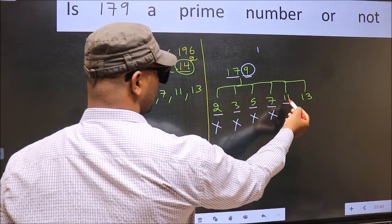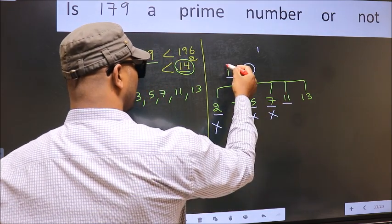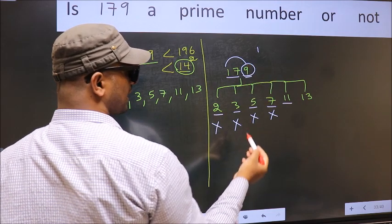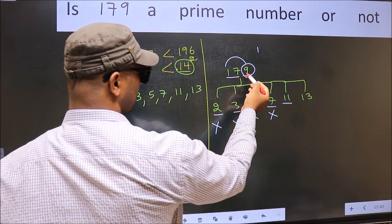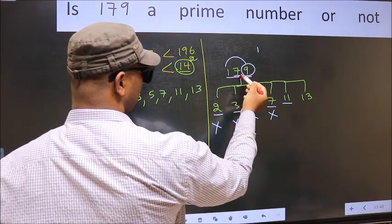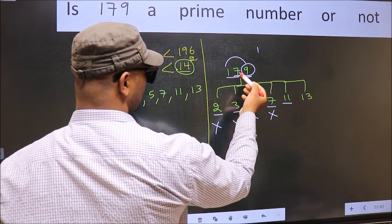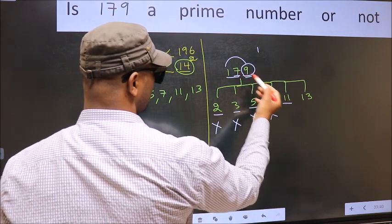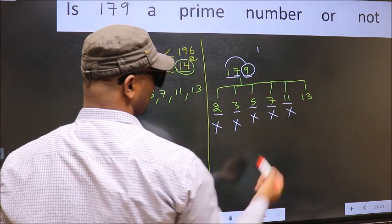Next, number 11. To check divisibility by 11, you add alternate numbers: 1 plus 9, 10. Subtract from 7: 10 minus 7, 3. 3 is not divisible by 11, so this number is also not divisible by 11.